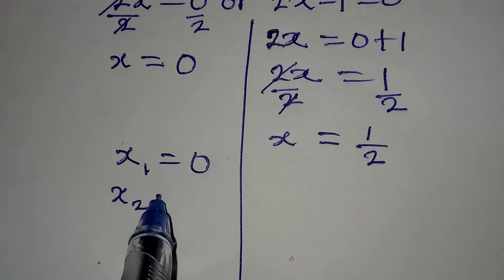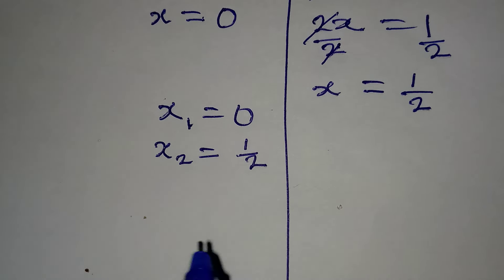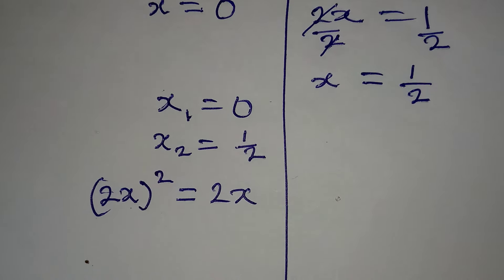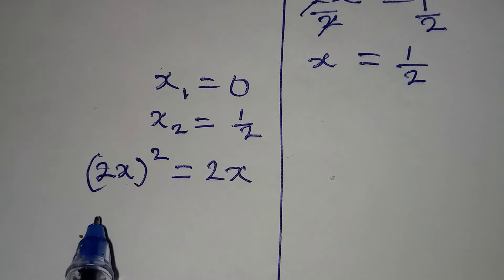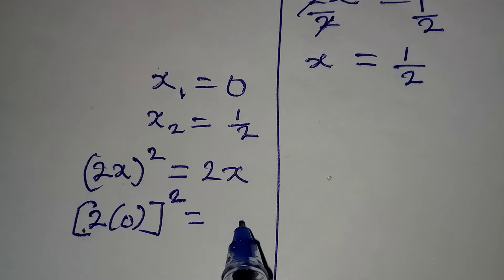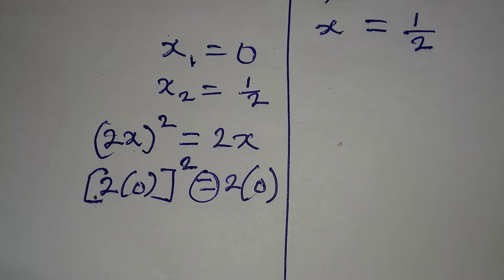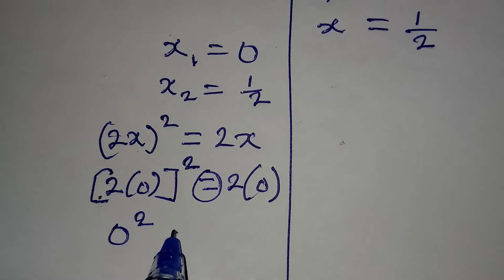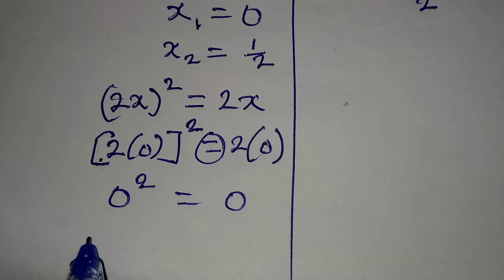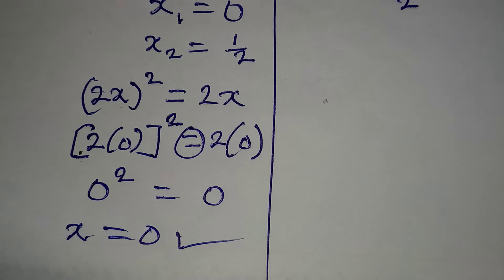Bringing the two values together: x₁ equals 0 and x₂ equals 1/2. Now let's confirm our results. The original equation is 2x squared equals 2x. Substituting x equals 0: 2 times 0, squared, equals 2 times 0, which gives 0 squared equals 0, and 0 times 0 is 0. So x equals 0 satisfies the equation.